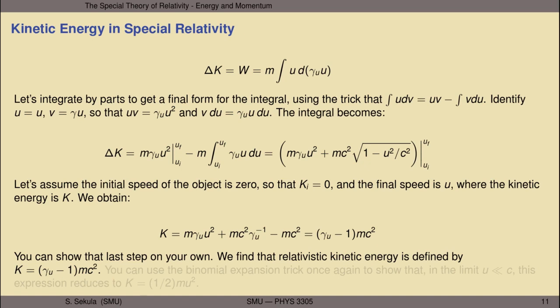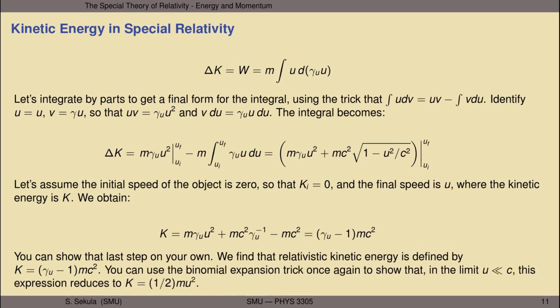The relativistic kinetic energy is just (gamma_u minus one) times mc², where m is the mass of the object, c is the speed of light, and gamma_u is its gamma factor relative to the frame in which it is being observed. You can use the binomial expansion trick again — and I encourage you to try this on your own — in the limit that velocity is much less than the speed of light, and you'll find that the expression reduces to one-half mu², the classical definition of kinetic energy. These quantities for momentum and kinetic energy have all the right behaviors: they reduce to their classical forms in the appropriate limit and leave laws of physics invariant.